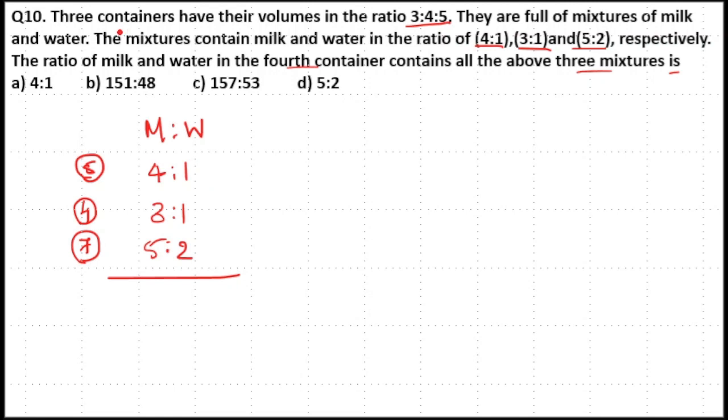Now three containers have their volumes in the ratio 3:4:5. So multiply the first ratio with 3, second ratio with 4, and third ratio with 5. Now multiply the first ratio with 4×7, second ratio with 5×7, and third ratio with 5×4 to equalize the total parts.